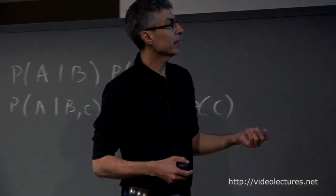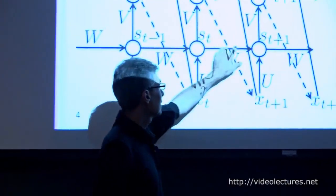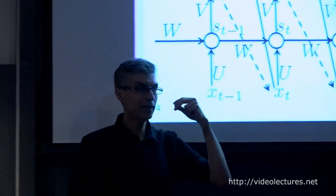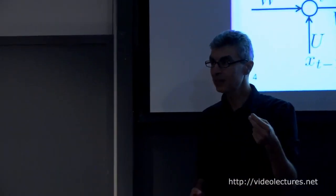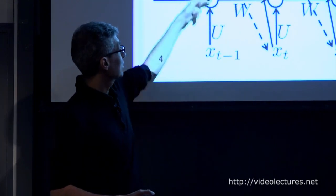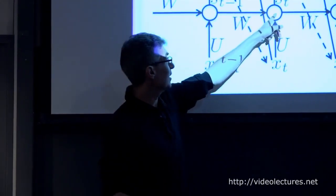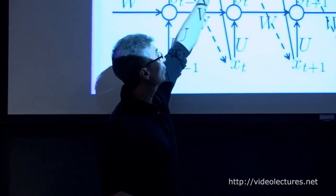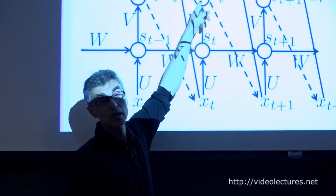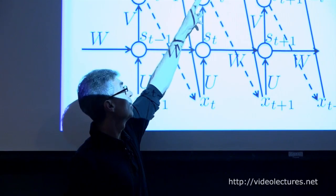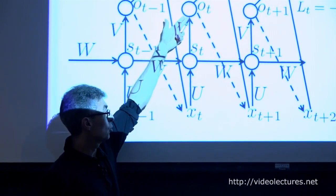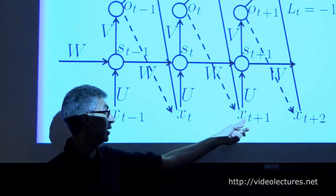Practically, how does this relate to a recurrent net? We have the state update equation and we produce some outputs. Now let's think of those outputs as telling us about the probability distribution of the next x_t given the previous ones, which are summarized by the state. The state at time t summarizes all the previous x's and we compute a probability for each of the possible symbol values for the next time step. We can then sample from that distribution to get a new symbol and use it as the next input.